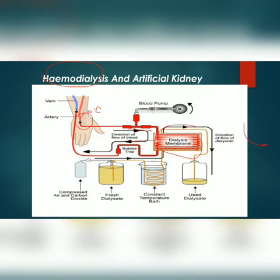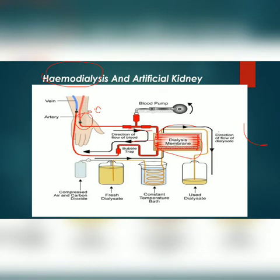In the artificial kidney, blood flows through channels or tubes bounded by a cellophane membrane. This membrane is permeable to solutes like urea, uric acid, creatinine, and mineral ions, but impermeable to macromolecules. The membrane separates the blood flowing inside the channels from a dialyzing fluid flowing outside the membrane. The dialyzing fluid contains some small solutes and mineral ions but does not contain nitrogenous waste products like urea, uric acid, and creatinine.